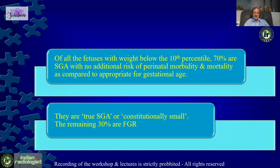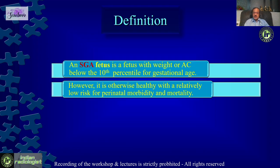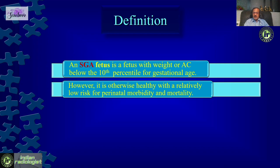Being constitutionally small is nothing abnormal. We know that our former external affairs minister, respected Sushma Swaraj, was constitutionally small as compared to the US external affairs minister, but she was very efficient. So being constitutionally small is nothing wrong. SGA is defined as a fetus whose weight is less than the 10th percentile but is otherwise healthy with relatively low risk of perinatal morbidity and mortality — meaning all other findings on ultrasound, especially Doppler, are normal.